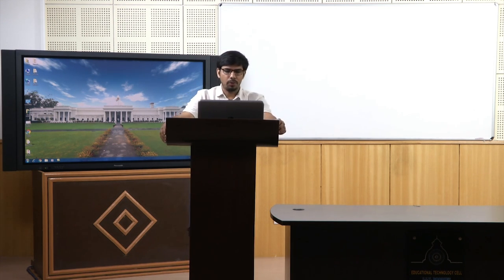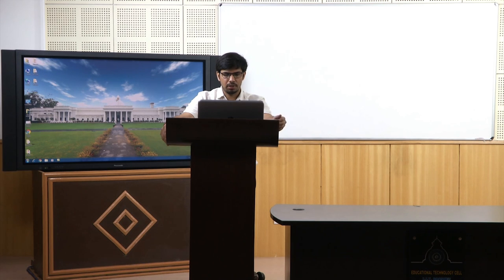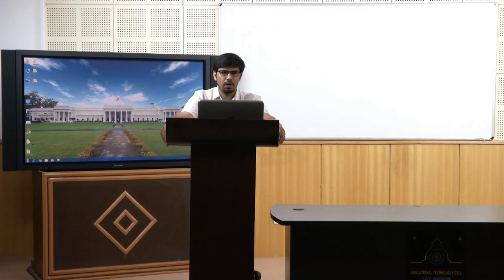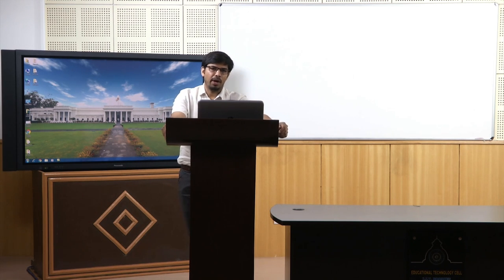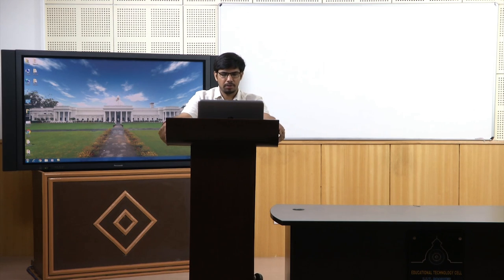Some examples include identifying appropriate bin sizes for converting a continuous variable into a categorical variable — when we look at graphs, we get an idea of what the bin sizes should be. Combining categories is another example: sometimes a categorical variable may have many categories, not all of which are useful for the specific task. Some groups can be combined, keeping only the meaningful categories, mainly for classification.